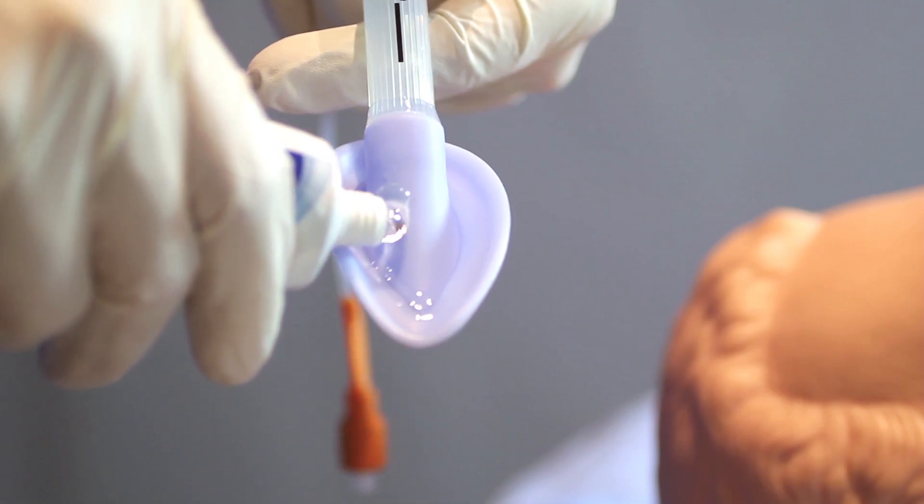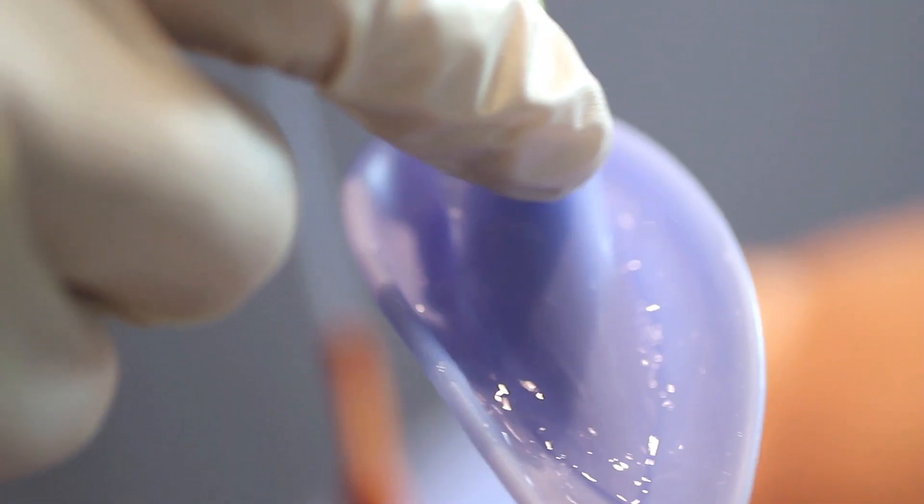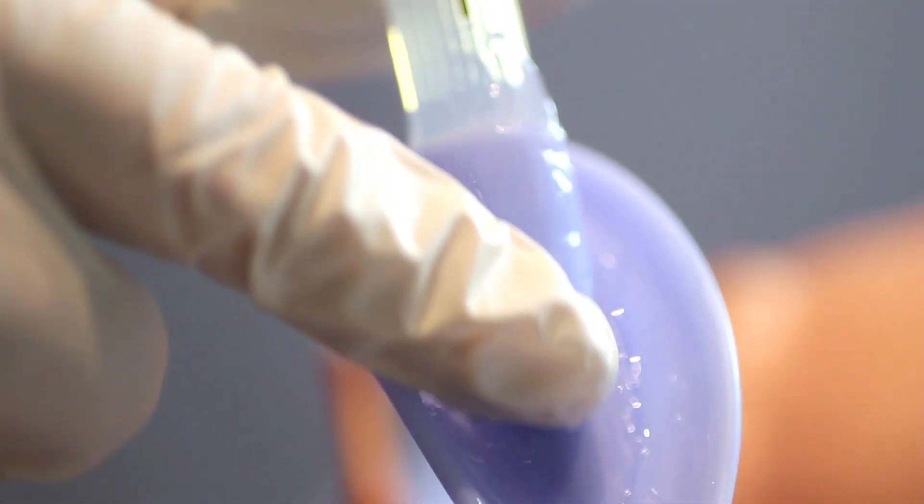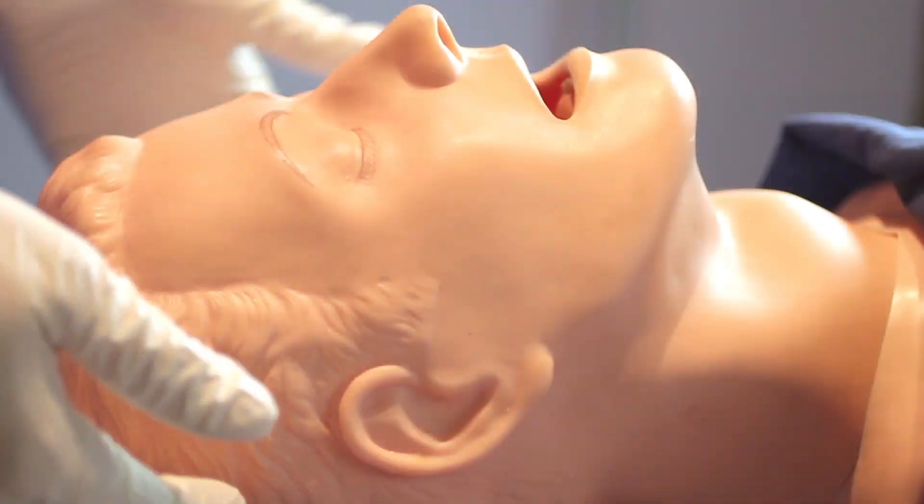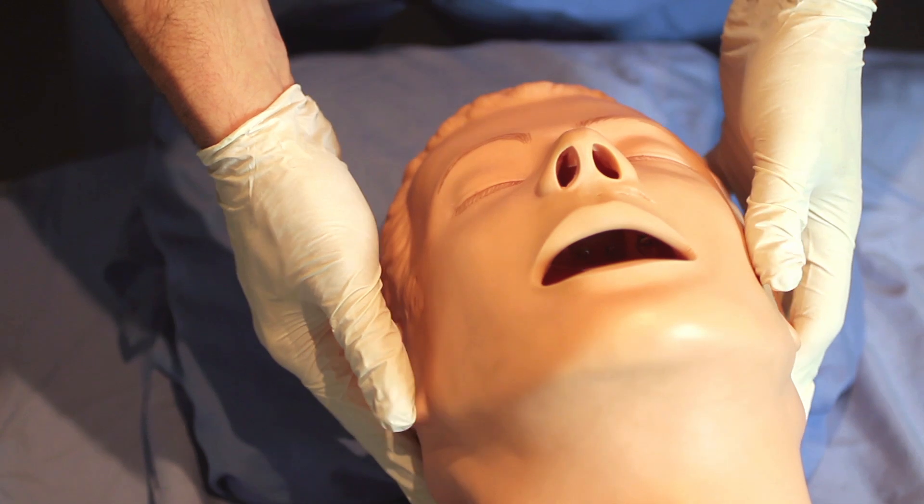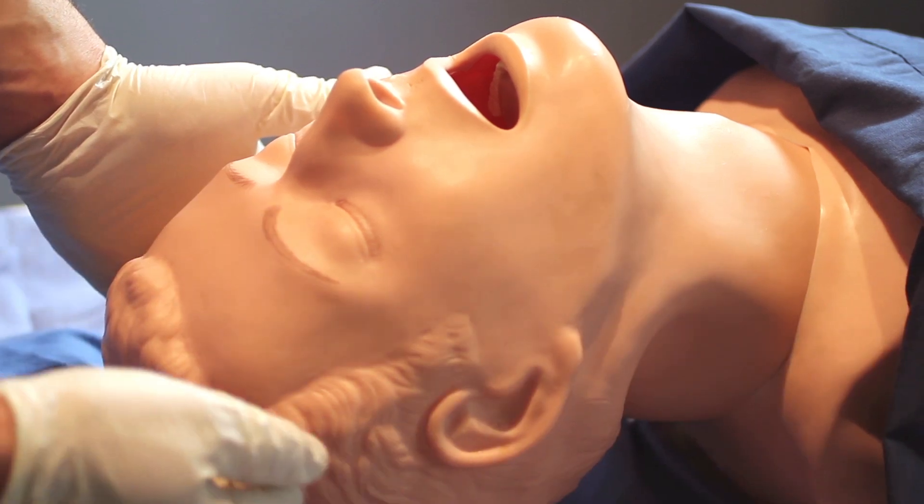Next, place a bolus of lubricating gel on the back plate of Laracel Blue. Massage the gel into the back plate and around the base of the main tube, taking care not to put any gel on the inner surface. Using the jaw thrust tilt and lift maneuver, extend the patient's head and neck. This will help align the airways for a quick and easy first time insertion. You are now ready to insert Laracel Blue.